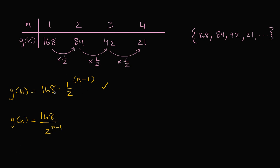Another way you could think about it is using our exponent properties a little bit, and we could say g of n is equal to, 1 half to the n minus one is the same thing as, it's equal to 168, let me do this in a different color. So this part right over here is the same thing as 1 half to the n, times 1 half to the negative one. Well, 1 half to the negative one is just two, is just two.